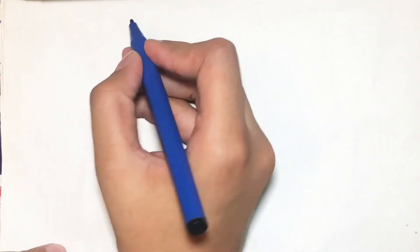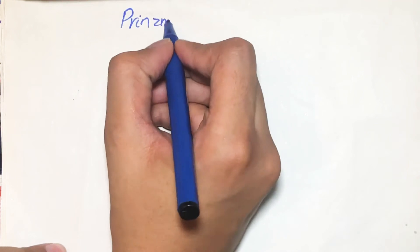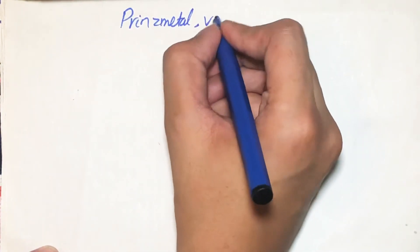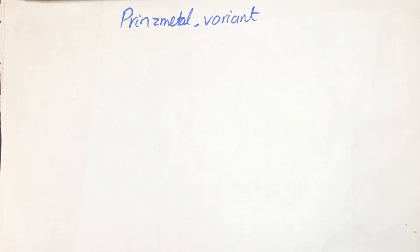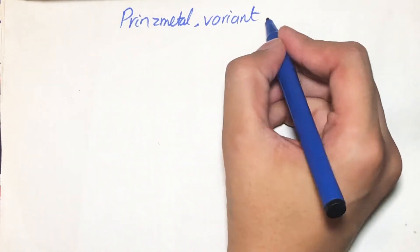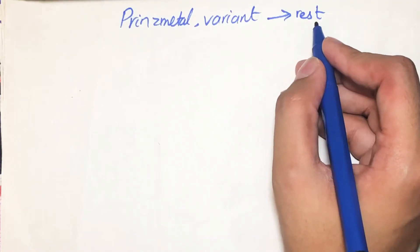In today's video we will be learning about Prinzmetal angina. Prinzmetal was the person who discovered this angina. It is also called variant angina, and it has two other names which we will discuss later. This is an uncommon pattern of episodic angina which occurs at rest, so we can also call it rest angina.